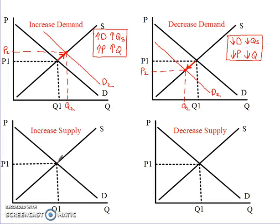So we're at this current equilibrium right here, and now the entire supply curve is going to shift to the right. We shift that to the right and call that supply curve S2. Then we find our new equilibrium where the new supply curve intersects the demand curve. We label our new price P2, and our new quantity Q2.